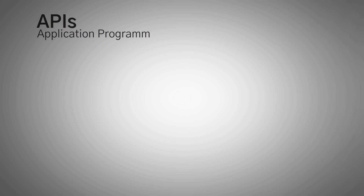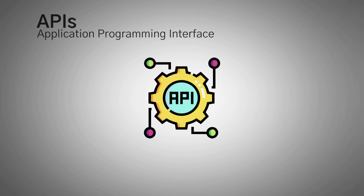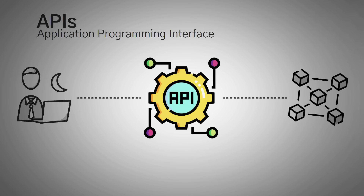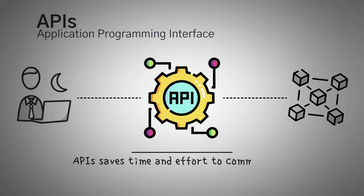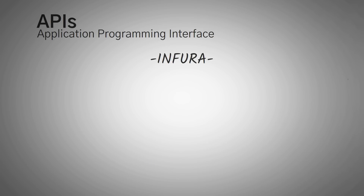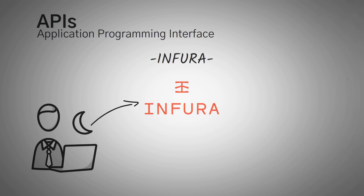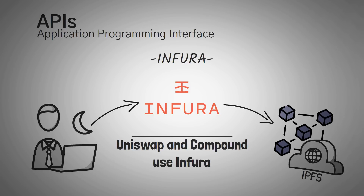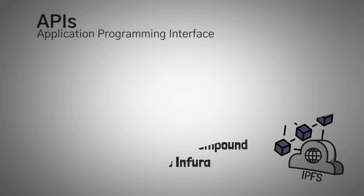Let's talk about APIs. APIs stand for Application Programming Interface. They are basically a middleman between us and a blockchain. Since it would take a lot of work to organize the information on a blockchain to ask it questions or look up a specific transaction, we can utilize these APIs to do it for us. First up is Infura. Infura lets developers scale with easy access to blockchains like Ethereum and a cloud-based data storage protocol called IPFS. Uniswap and Compound are two dApps that actually use the Infura network.